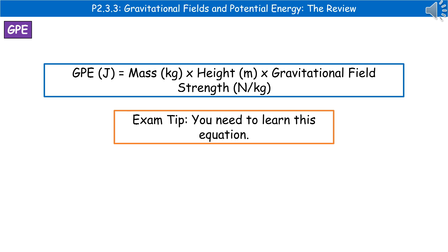We need to learn another formula for gravitational potential energy: GPE equals mass in kilograms times height in meters times gravitational field strength. Make sure you've learned all of these equations, otherwise you're really going to struggle on your P2 exam paper.